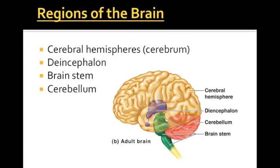When we talk about the central nervous system, it's divided into the brain and the spinal cord. We are going to start this presentation by discussing the four major regions of the brain: the cerebral hemispheres, the diencephalon, the brain stem, and the cerebellum.